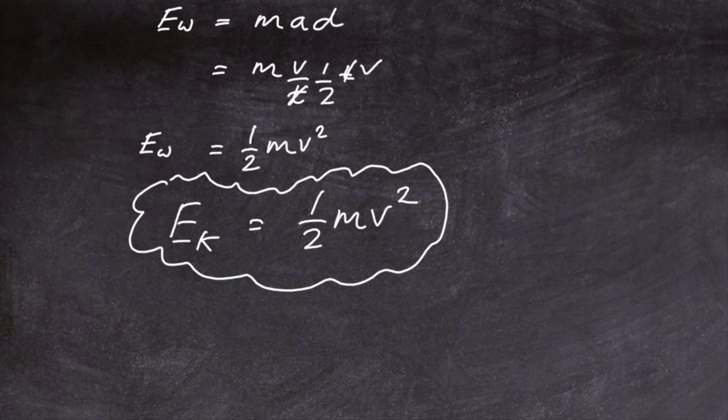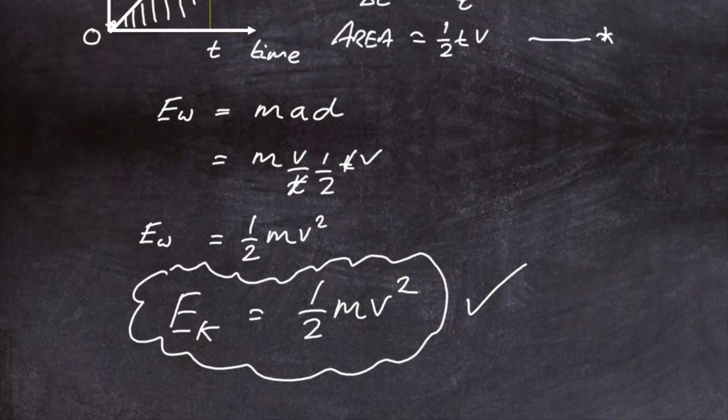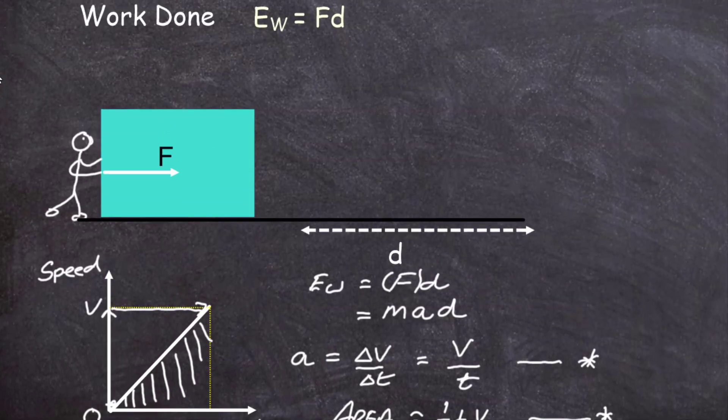The kinetic energy formula tells us quite a lot. It tells us that if the mass increases, the kinetic energy — the moving energy of the object — increases as well. And also, because V is squared, if we double the speed of an object we are actually making its kinetic energy four times as big. So that's the kinetic energy formula, derived from our simple starting point that work done equals force times distance.